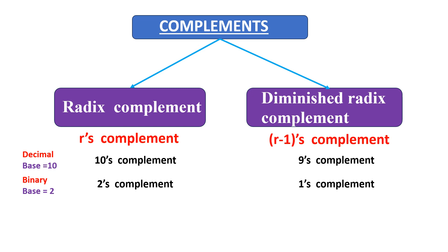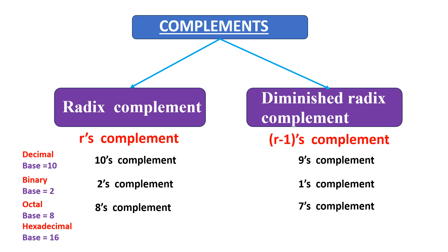For an octal number system, the base is 8. So the R's complement will be 8's complement and the R minus 1's complement is referred to as 7's complement. In a hexadecimal number system, the base is 16. So the R's complement is 16's complement and the R minus 1's complement is referred to as 15's complement.